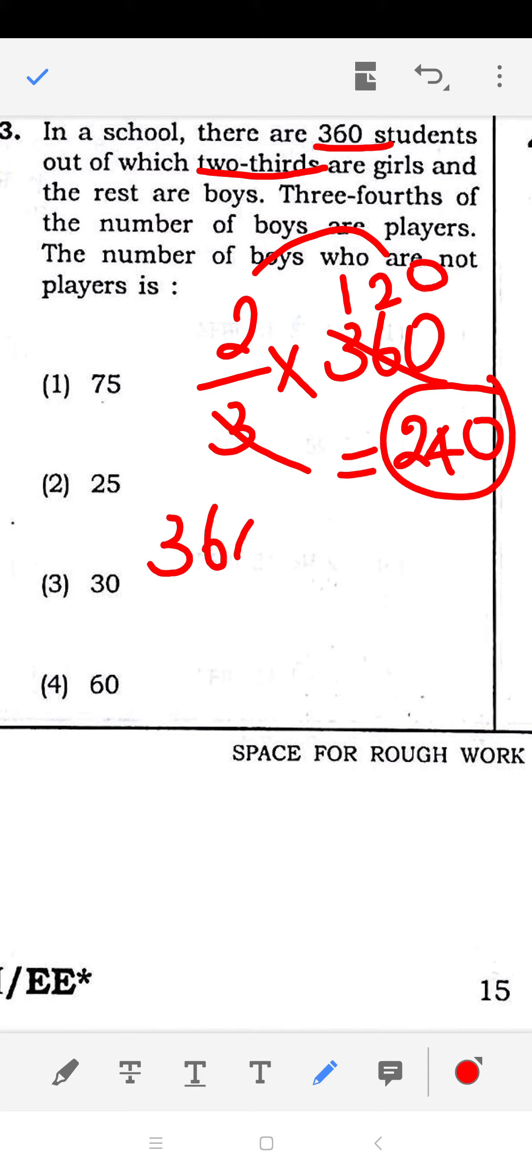I know the total students. Total number of students minus number of girls - subtract it. The remaining number is the number of boys. There are 120 boys in the school.